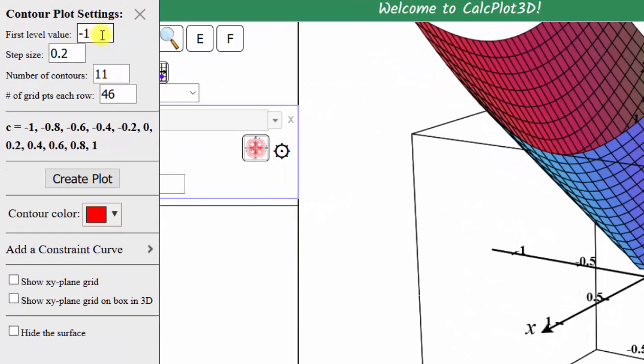There are several options here. Notice how we have the first level value, which is the first value of c listed here. Remember the c values would be the constants we would set the function equal to, to create each level curve or contour plot.